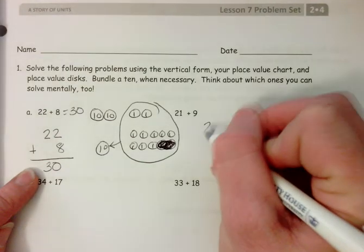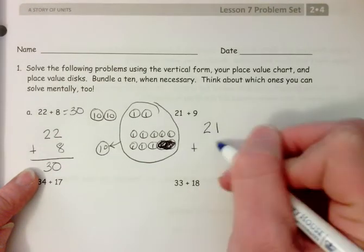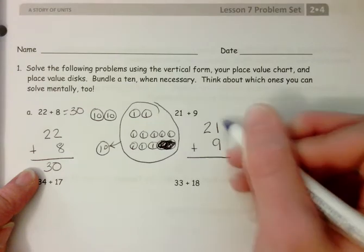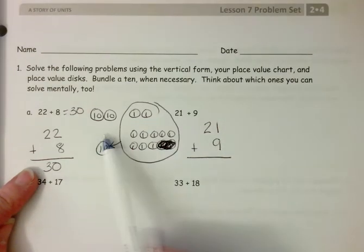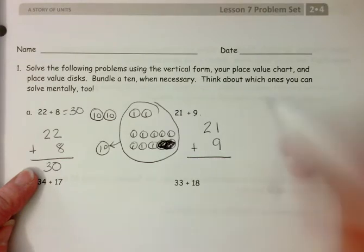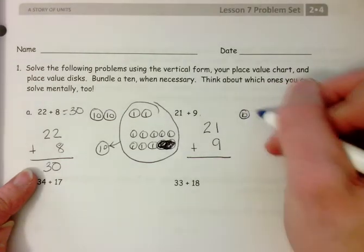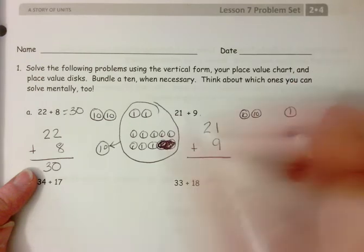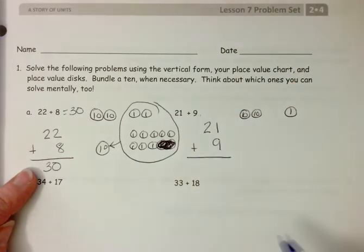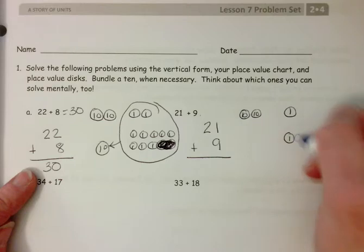If your child is not lining up their ones underneath the ones, go back to the drawings and ask them where they would show their nine ones. So if I was showing my 21 and then I was adding nine ones, where would I put them? I'm going to put them here.